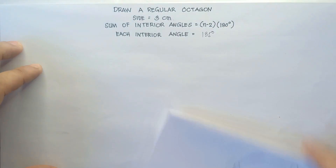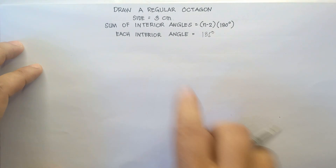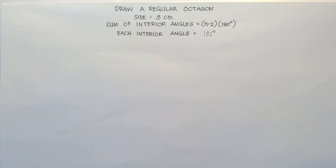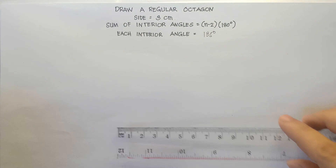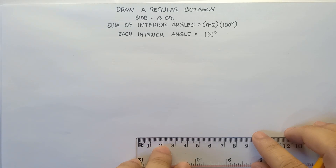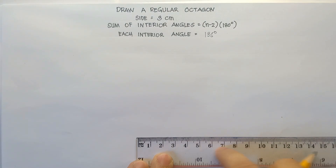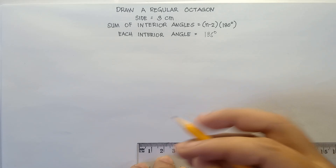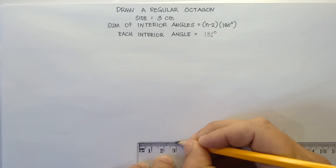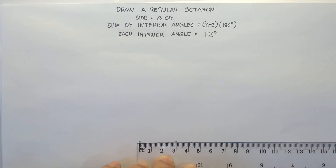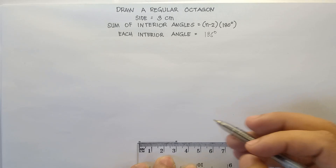Now that we have the interior angle and the side length, we can draw the regular octagon. Let's start with a 3-centimeter horizontal line. These are centimeters on the top of the ruler. We have a line segment that is 3 centimeters. You can sketch this with a ball pen.